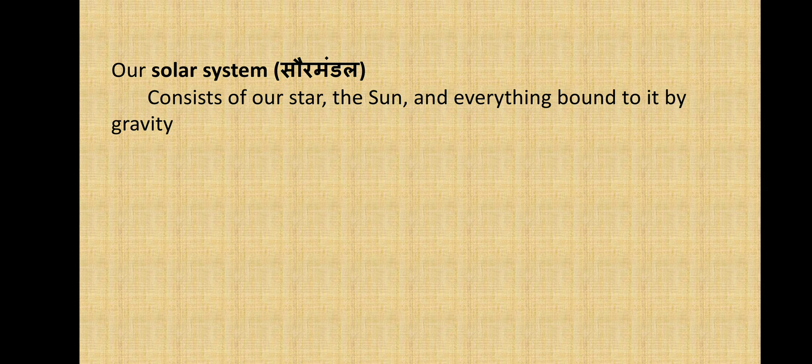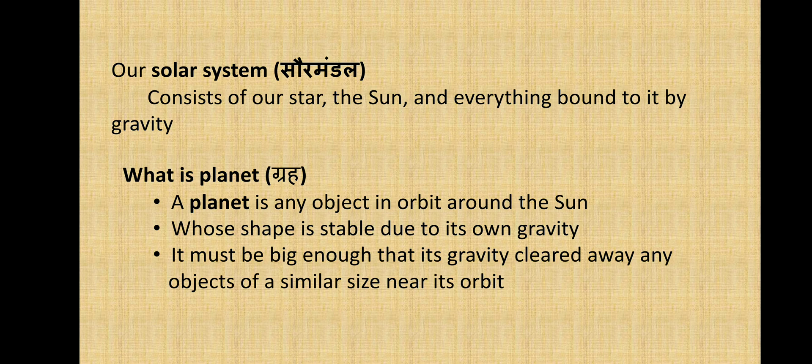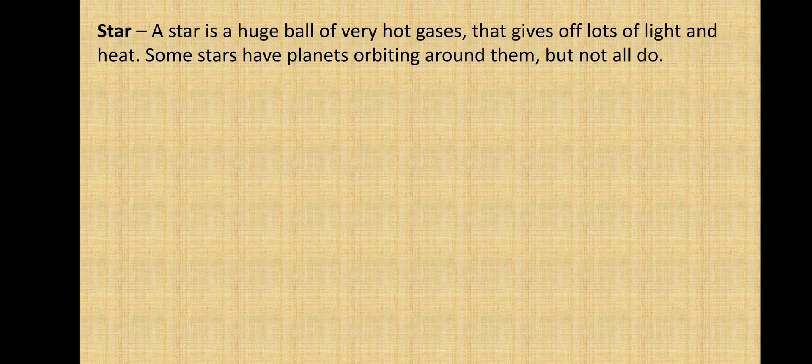First let's know what a solar system is. Our solar system consists of the star, the sun, and everything bound by gravity. A planet is any object in orbit around the sun whose shape is stable due to its own gravity, and it must be large enough that its gravity has cleared away any objects of a similar size near its orbit.